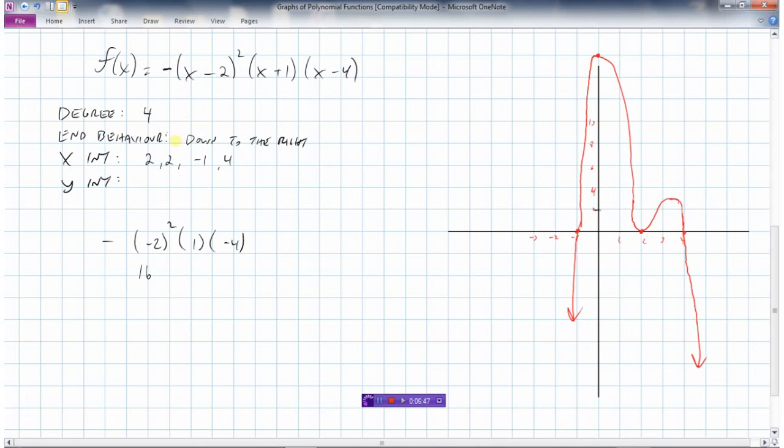Let's just check that we've done everything right. Degree 4: 1, 2, 3, 4. Good. End behavior is down to the right. Yes. We have a double root at 2, so it needs to bounce off there at 2. Yes. Goes through the x-axis at negative 1. Yes. And goes through the x-axis at 4. Yes. So I have a graph now drawn that meets the criteria that we have in the function here.